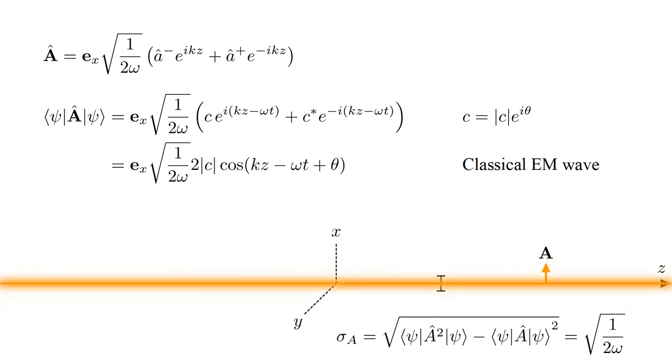But as field amplitude decreases, quantum noise becomes an ever larger fraction of the field. In the limit c equals zero, for which the classical field vanishes, quantum fluctuations remain. This is the vacuum state.